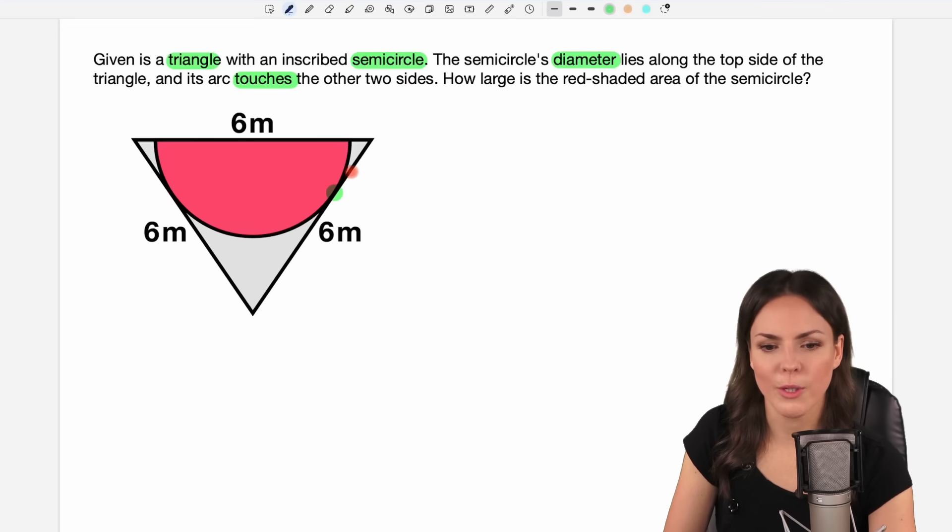So here at this point our semicircle touches the side of the triangle and here on this side the same. And the question is how large is the red shaded area of the semicircle?